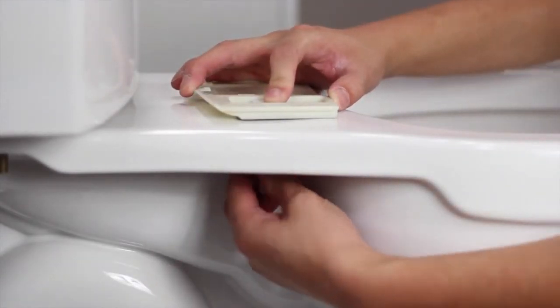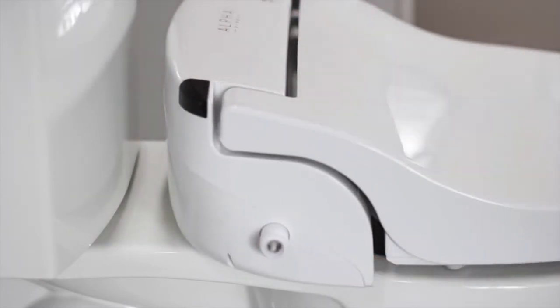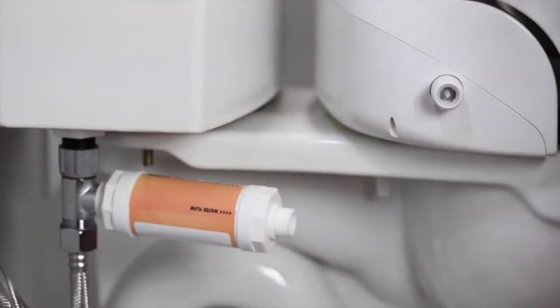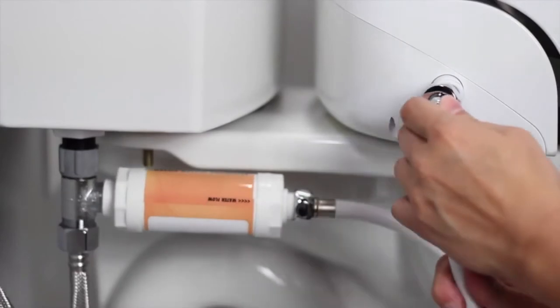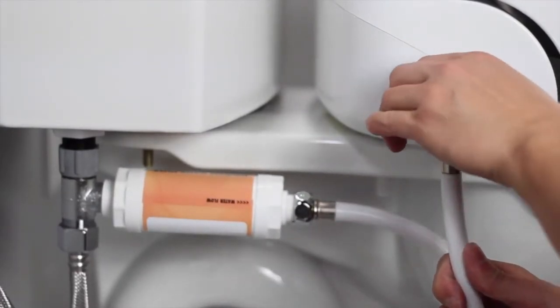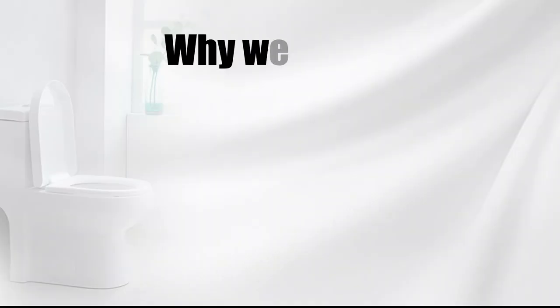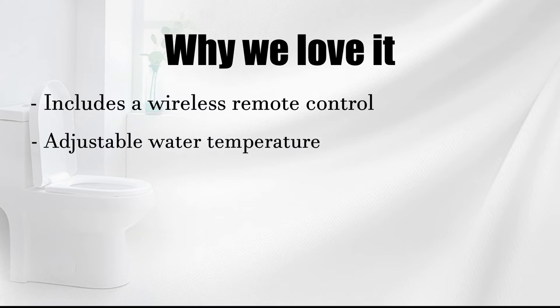Its built-in tankless water heating system uses 40% less water than other bidet toilet seats. It also has a motion sensor that automatically turns on the LED light to illuminate the surrounding area, making nighttime walks to the toilet safe. The cleaning is super quiet, as is the soft close lid. Why we love it? Includes a wireless remote control, adjustable water temperature, automatic LED light.